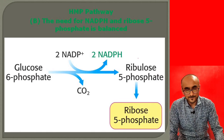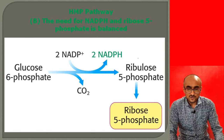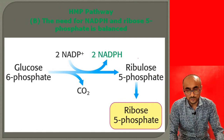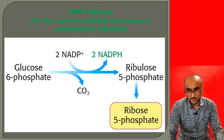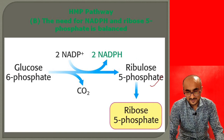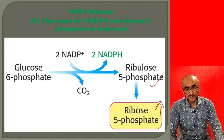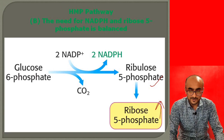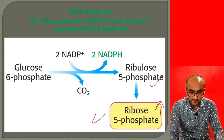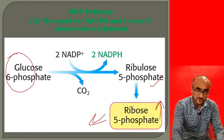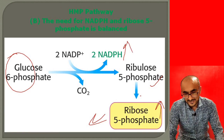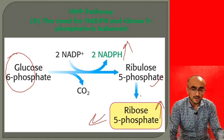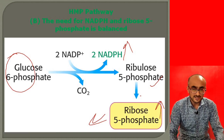In a situation where the cell needs both NADPH and ribose-5-phosphate in a balanced manner, glucose-6-phosphate is converted to ribose-5-phosphate via the oxidative reactions. When both products are being consumed, more glucose-6-phosphate is channeled into the pathway, producing both ribose-5-phosphate and more NADPH. The demands for both NADPH and ribose-5-phosphate are thus managed by the cell through this pathway.